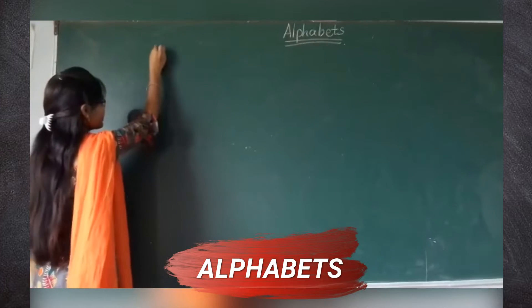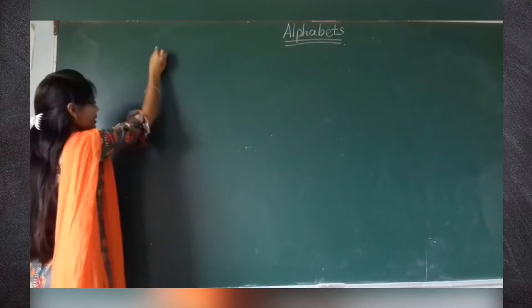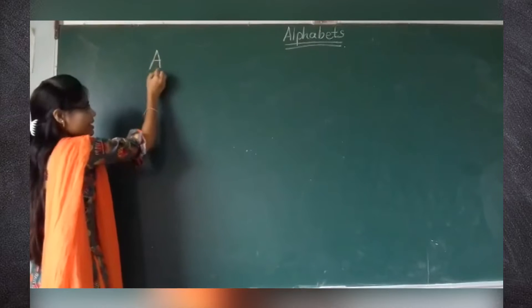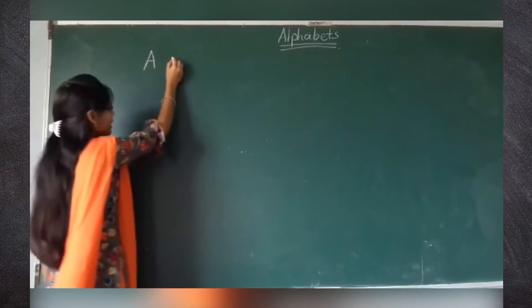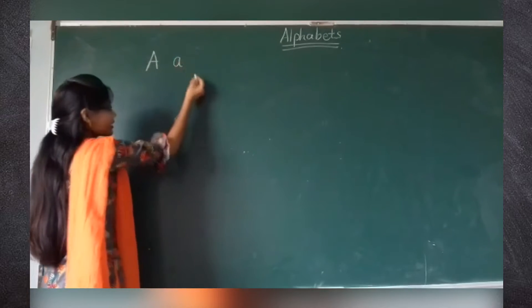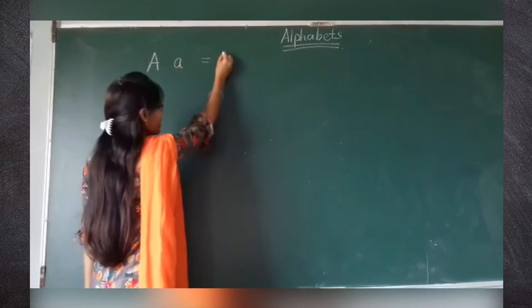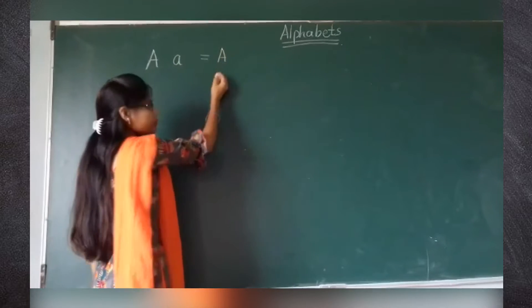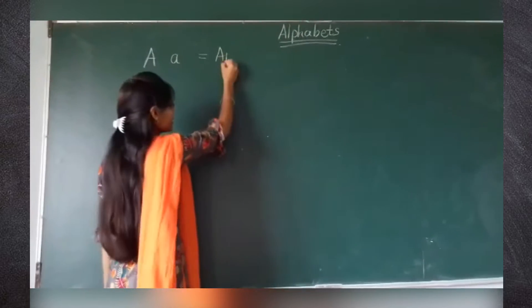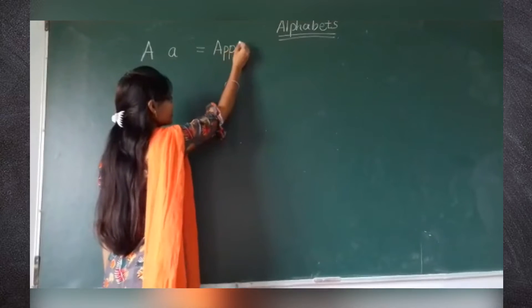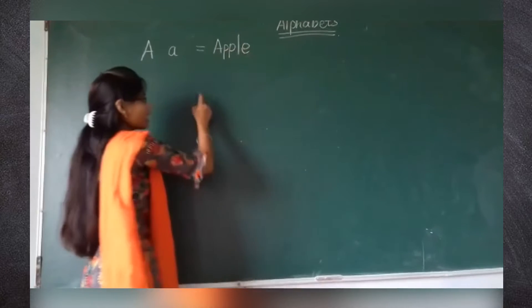First alphabet is A. This is our capital A and this is small a. A for apple. Spelling of apple is A-P-P-L-E. Apple.